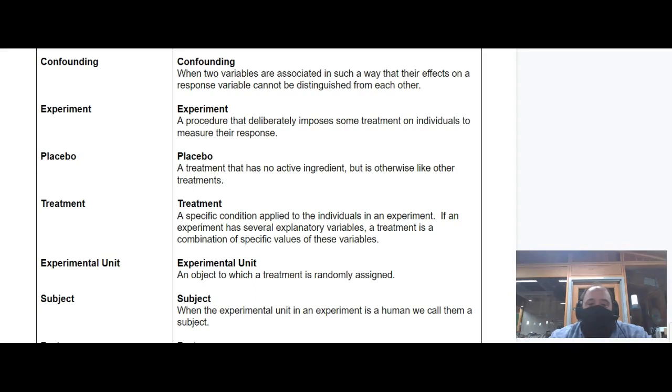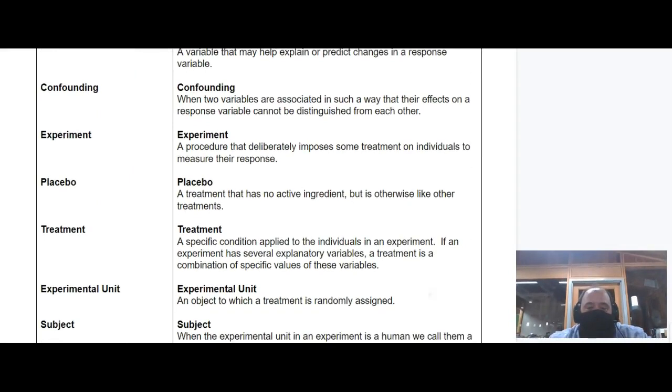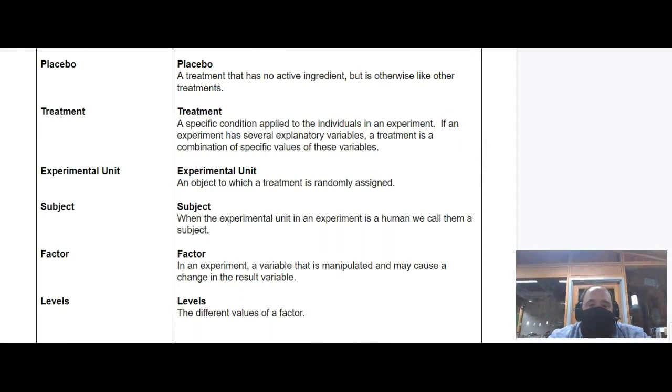The placebo does everything that the treatment does except for the one thing that you're measuring, and that helps us deal with some confounding issues. A treatment is a specific thing that you do to an experimental unit so that you can watch the result. It can be a combination of different things.